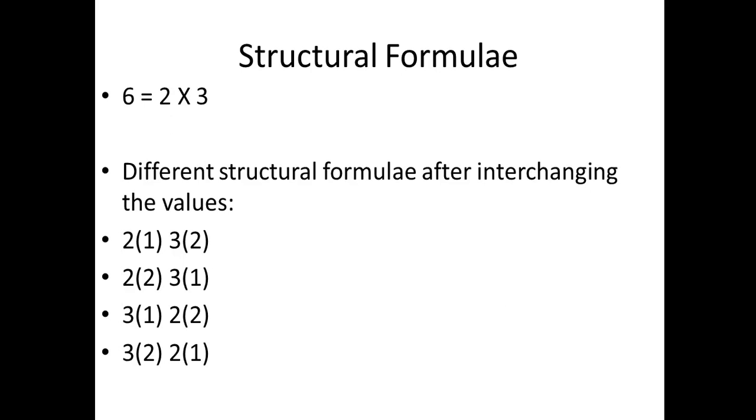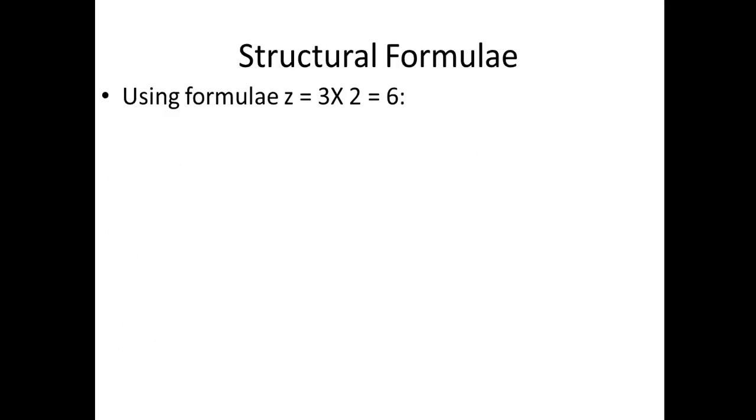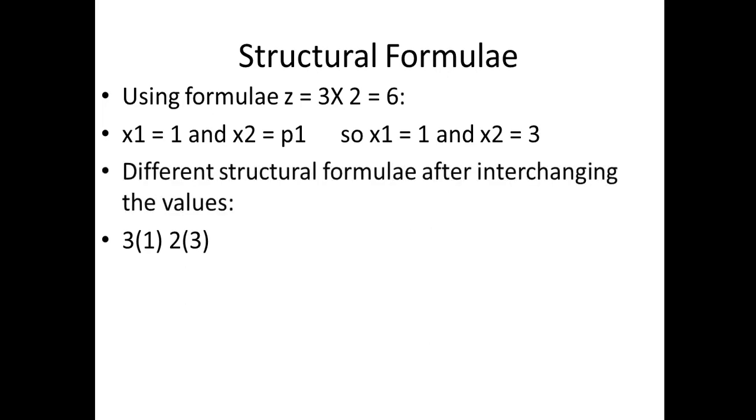These are the four combinations that I found out. Same way now I want to go for three twos are six. So in this case X1 is 1, X2 is P1 and here P1 is 3, so X2 is 3. So if I put the values it will be 3(1) 2(3). If I interchange the values just like I did it for two threes are six, this combination I could achieve.